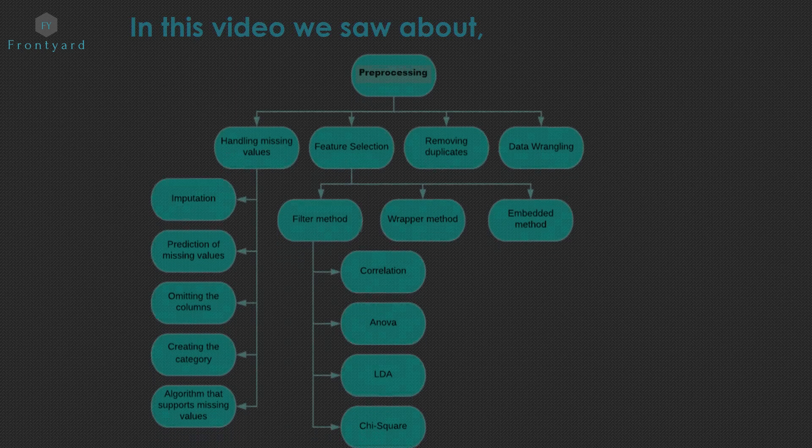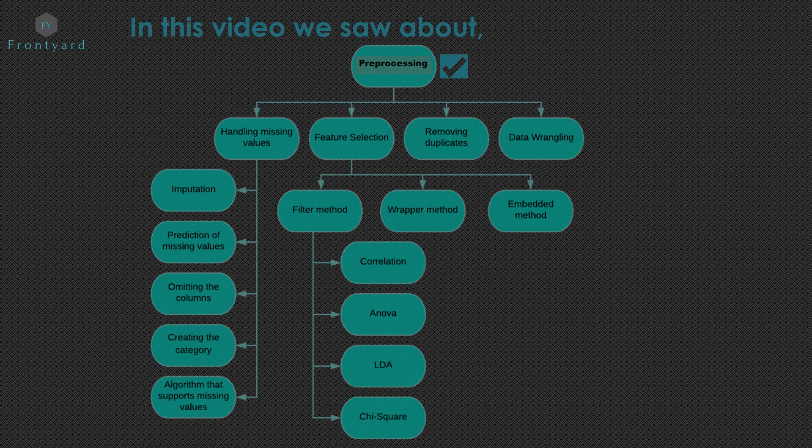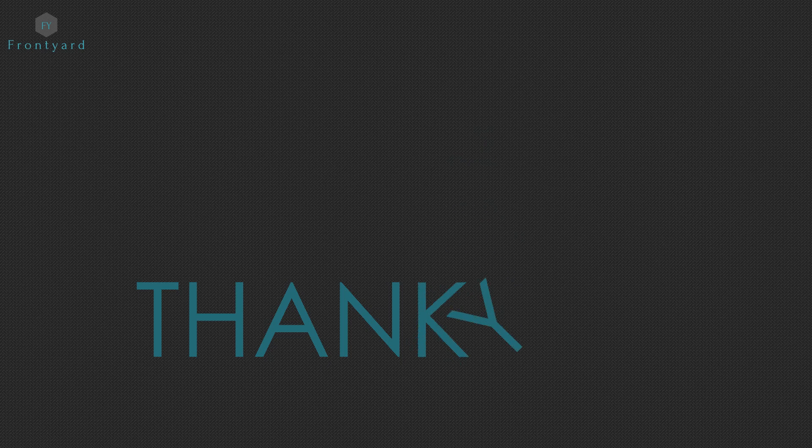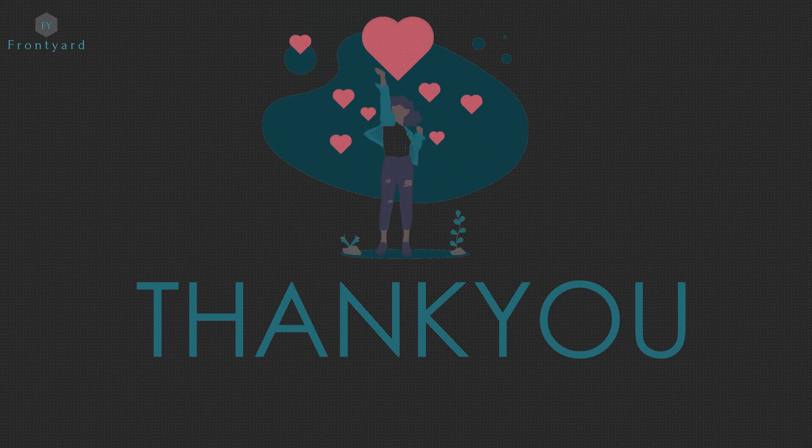In this video, we saw about preprocessing and in that, we saw feature selection. In that, there are three methods like filter method, wrapper method and embedded method. Today, we saw correlation, ANOVA, LDA, chi-square in filter method. I hope you all gained some idea about feature selection in preprocessing the data. Stay connected! We will catch you on our next video. If you have any doubts, let me know in comment section. Please like, share and subscribe to Frontier 2020.